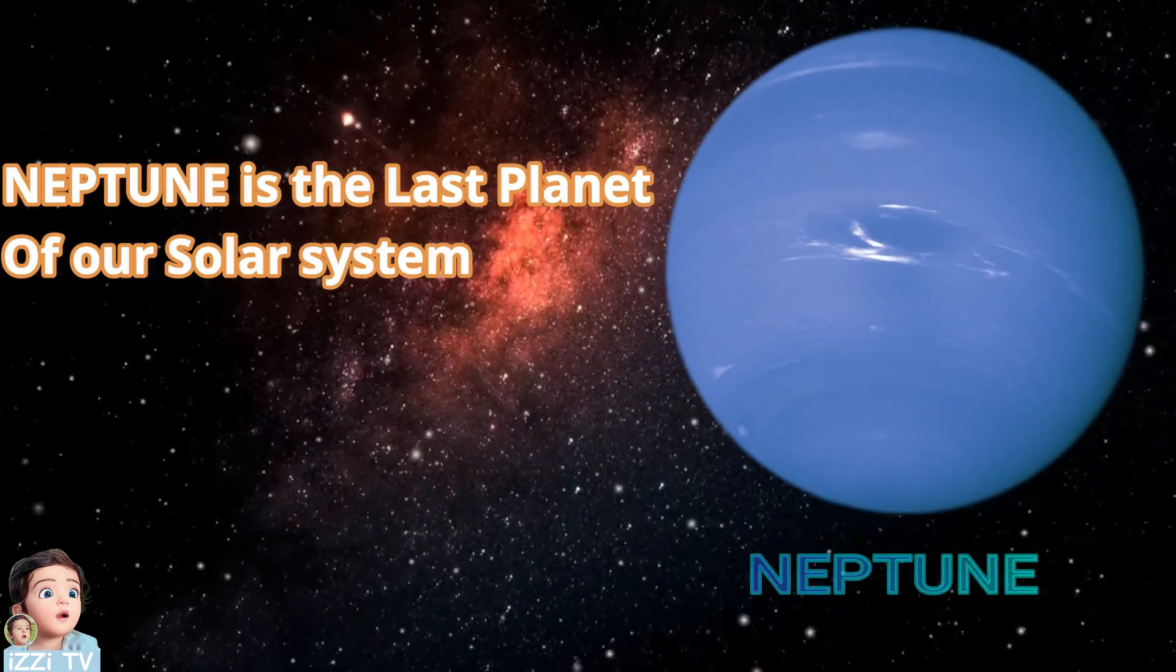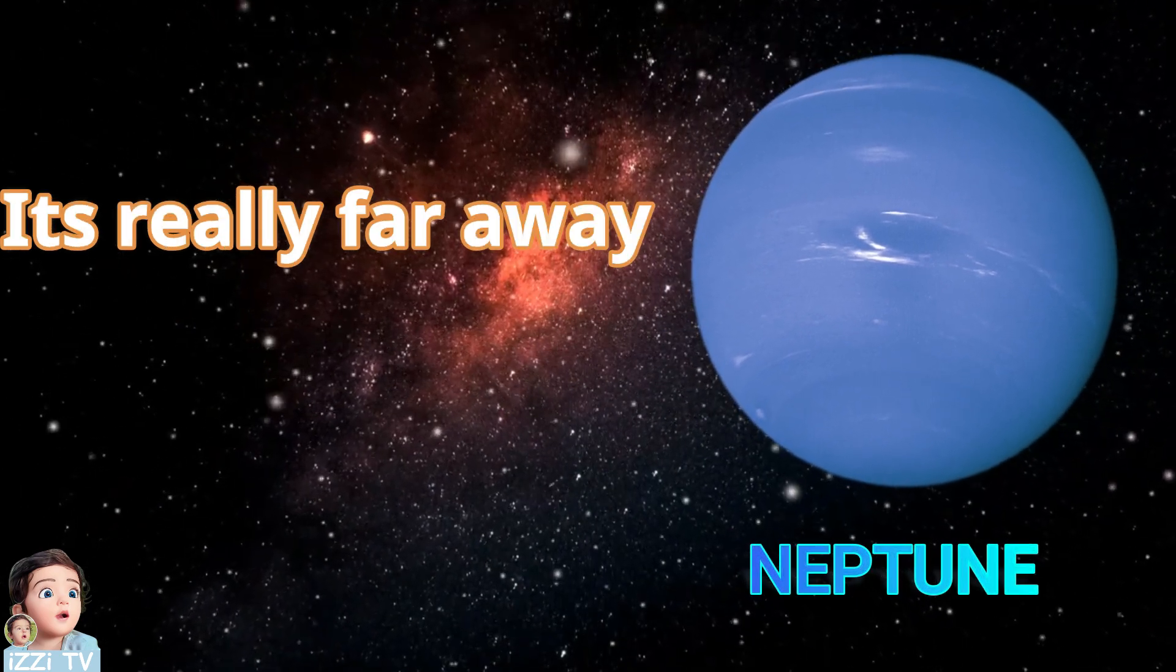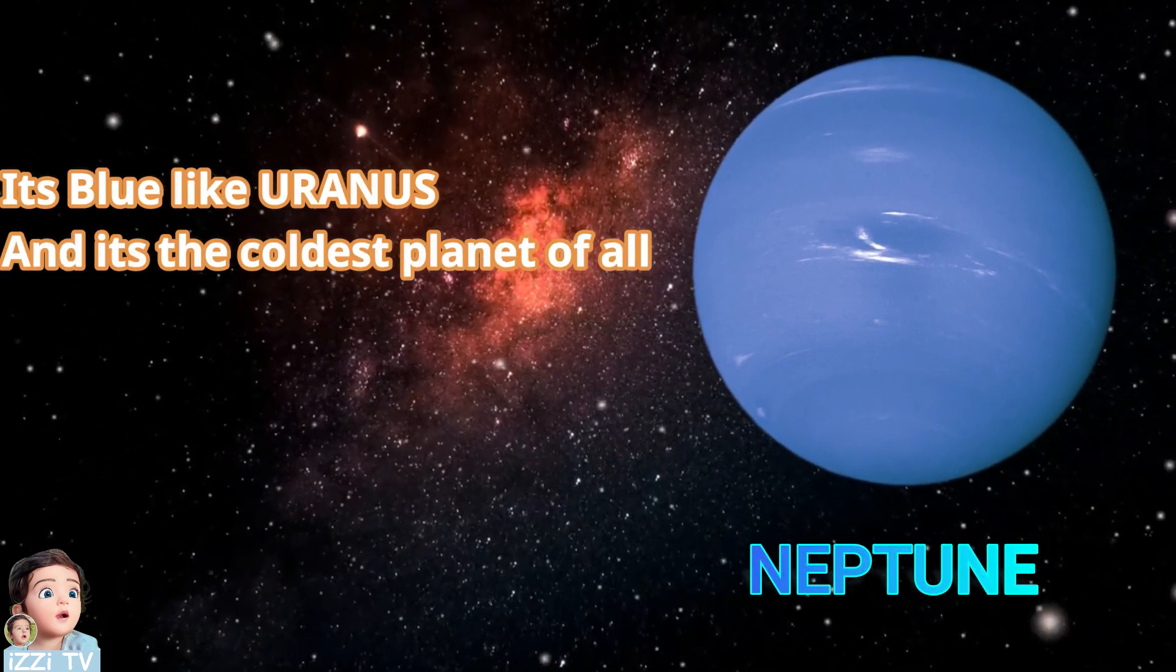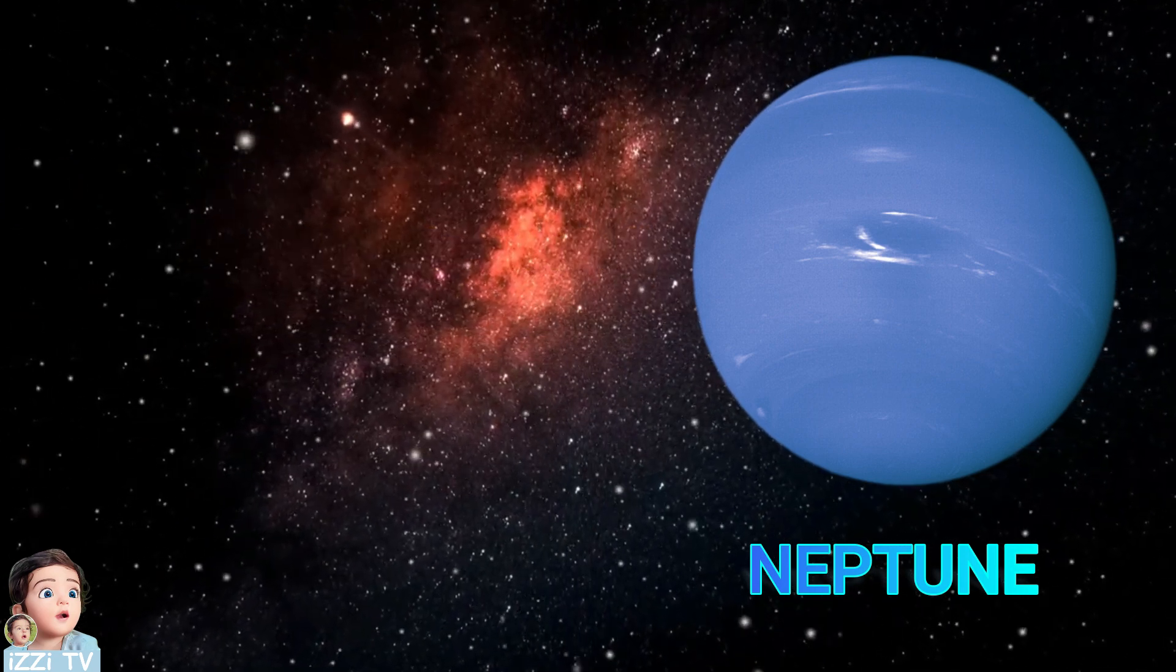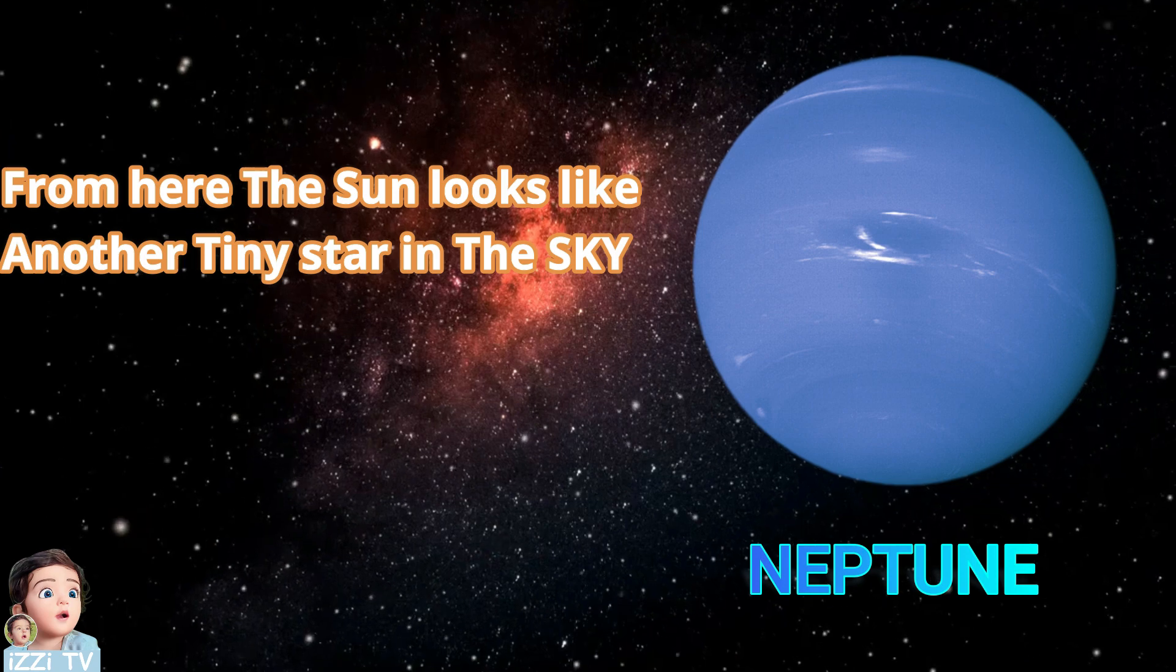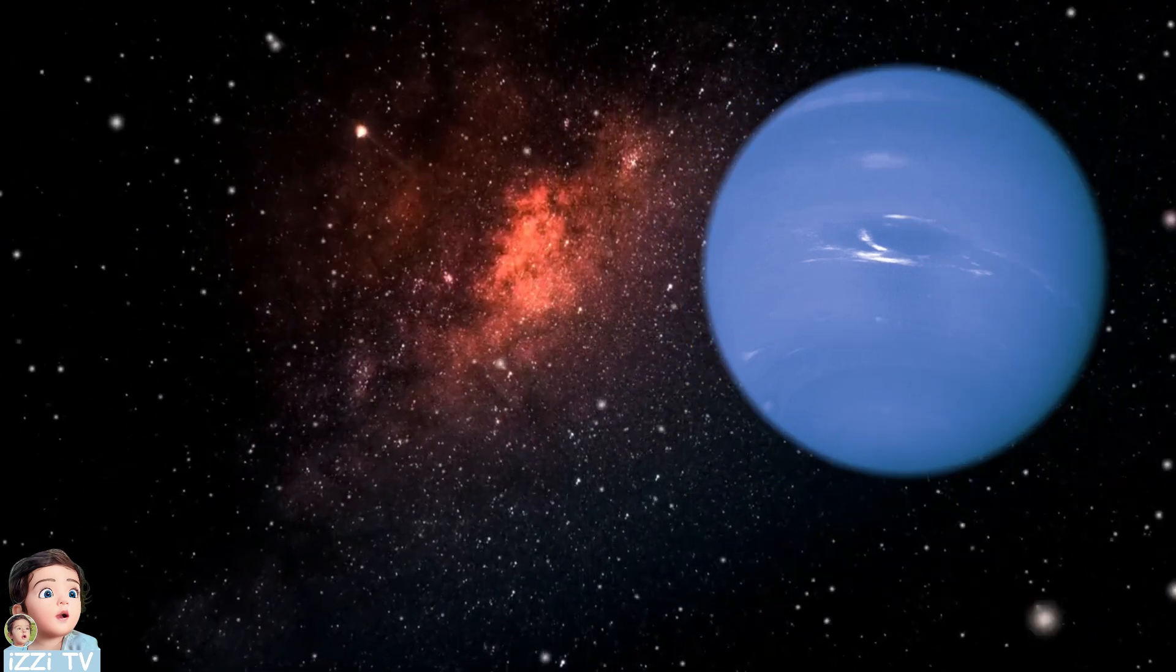Neptune is the last planet of our solar system. It's really far away. It's blue, like Uranus, and it's the coldest planet of all. From here, the sun looks like just another tiny star in the sky.